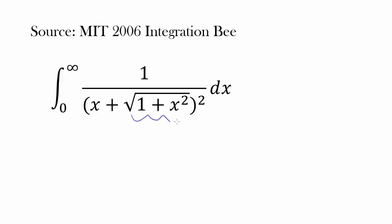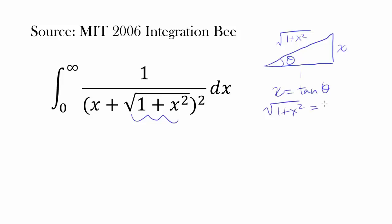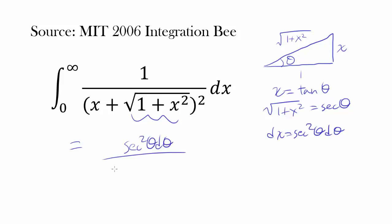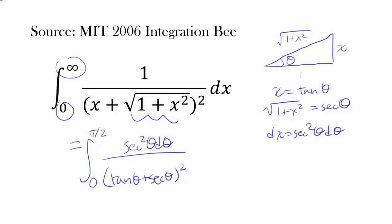Maybe the first thing you thought of when you see square root of 1 plus x squared is to use trigonometric substitution. We set x as the opposite side, 1 as the adjacent, and the hypotenuse is square root of 1 plus x squared. So x equals tangent theta and square root of 1 plus x squared equals secant theta, giving us dx equals secant squared theta d theta. We have secant squared theta d theta divided by tangent theta plus secant theta, all squared. Since x goes from 0 to infinity, theta goes from 0 to pi over 2.